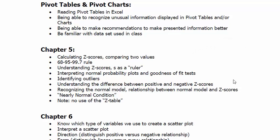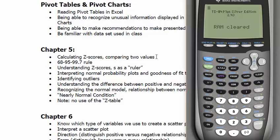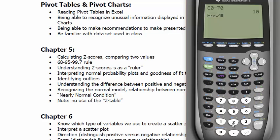Let's do an example similar to one on your homework. The average test score for Stat 201 was 70. Johnny scored an 80 and the class had a standard deviation of 5 — what was his z-score? We take observation minus mean: he scored 80 and the average was 70, so he was 10 higher. Then we divide by the standard deviation.